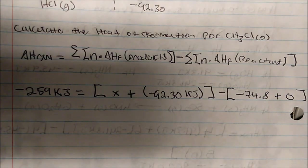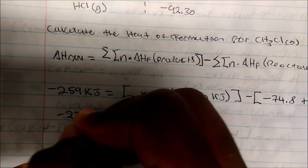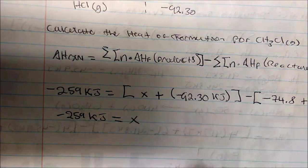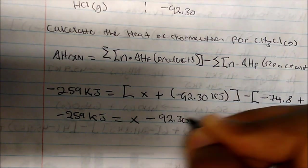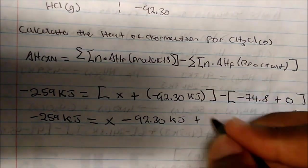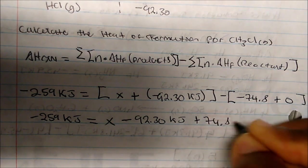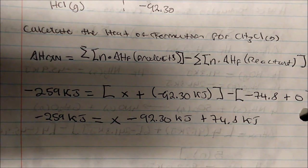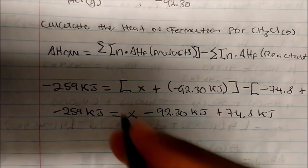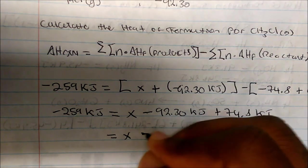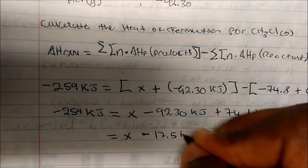Taking out the calculator, I get negative 59 kilojoules equals X plus negative 92.30 kilojoules, and the negative sign distributes over the reactants giving plus 74.8 kilojoules. Now solving for X: combining negative 92.30 plus 74.8 gives negative 17.5 kilojoules, so negative 59 equals X minus 17.5 kilojoules.